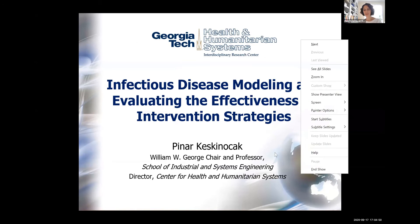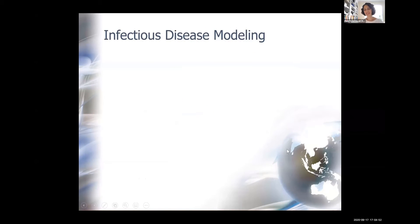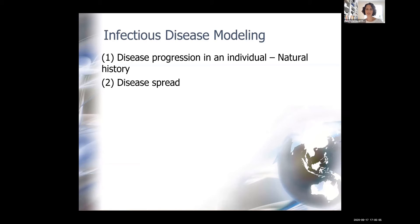This is going to be a 10,000-foot, very quick overview of some aspects of infectious disease modeling and how the computing community has been helping modelers like me populate these models with meaningful data. When we think about disease modeling, there are two key components: one is the natural history of the disease — essentially how it progresses within an individual after contracting the disease — and the second is how it spreads in a population.